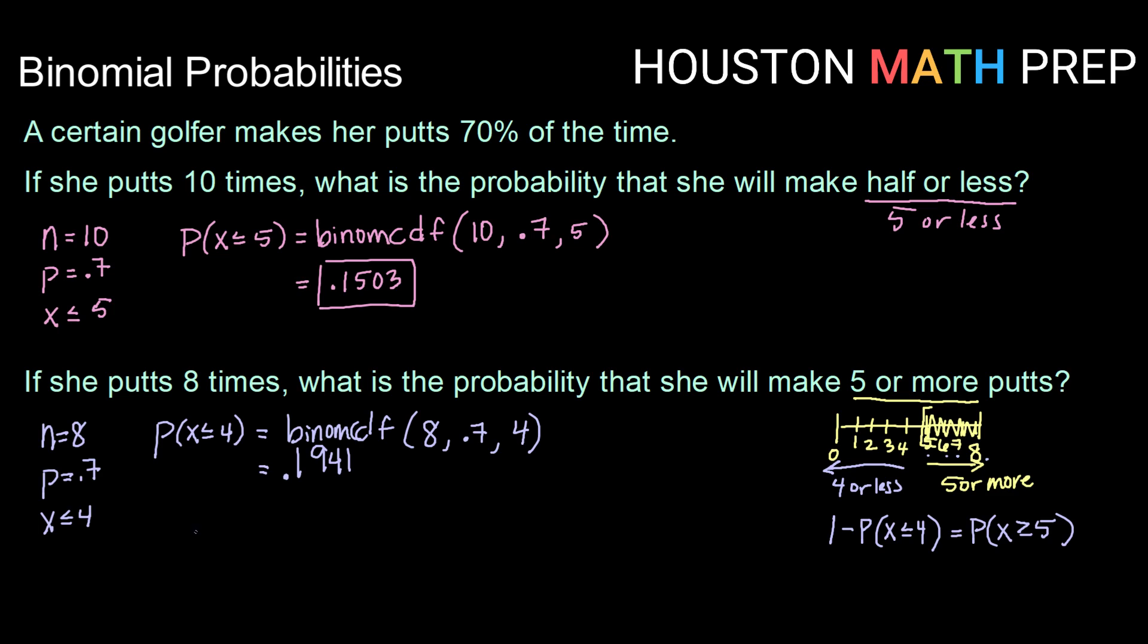So that's our probability of making 4 or less. So taking that and combining, our probability of making 5 or more will be 1 minus 0.1941 or 0.8059.